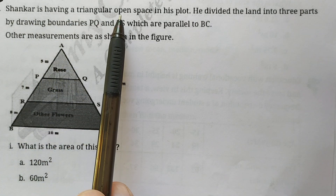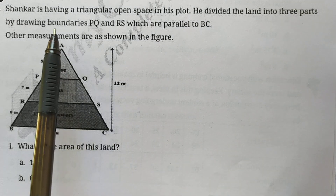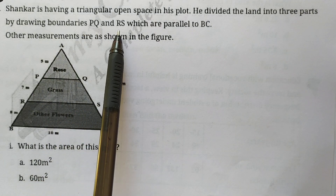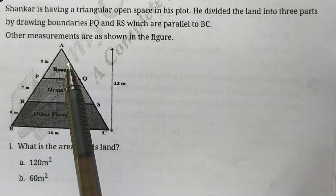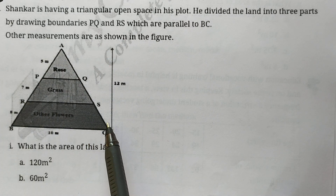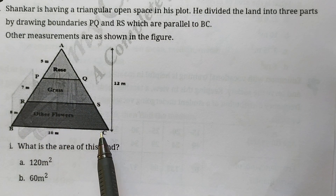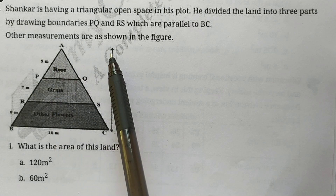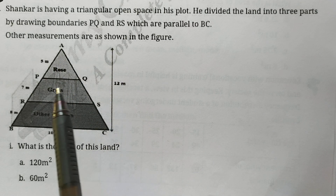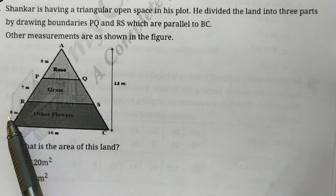Shankar is having a triangular open space in his plot. He divided the land into three parts by drawing boundaries PQ and RS, which are parallel to BC. So other measurements are shown in the figure. ABC is a triangular plot in which BC is 10 meters. PQ and RS are parallel to BC. The height of the triangle is 12 meters, AP is 5 meters, PR is 7 meters, and RB is 8 meters.